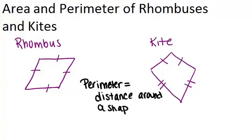For the rhombus, that would mean you need to know the length of one side, and you can multiply that by four, since all four sides are the same length. For the kite, you need to know the two different sides, and you could add those up and times by two, or just add up all four sides.